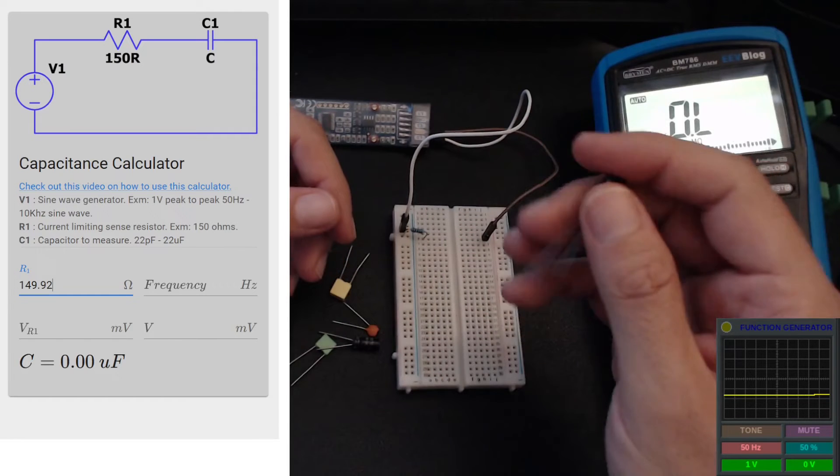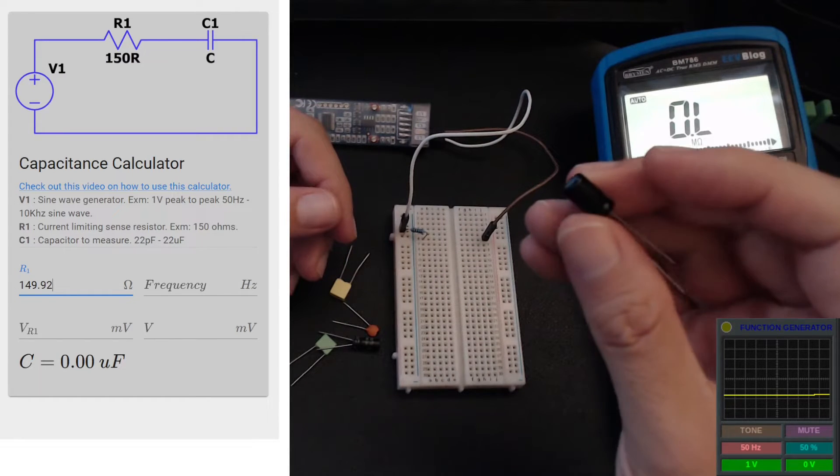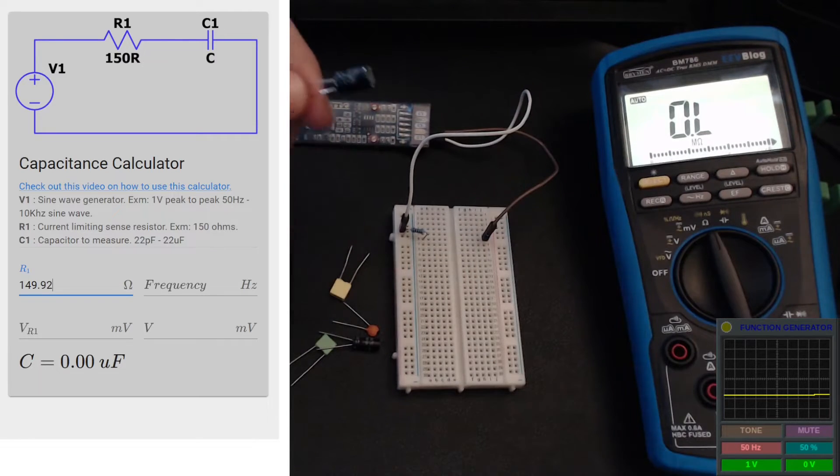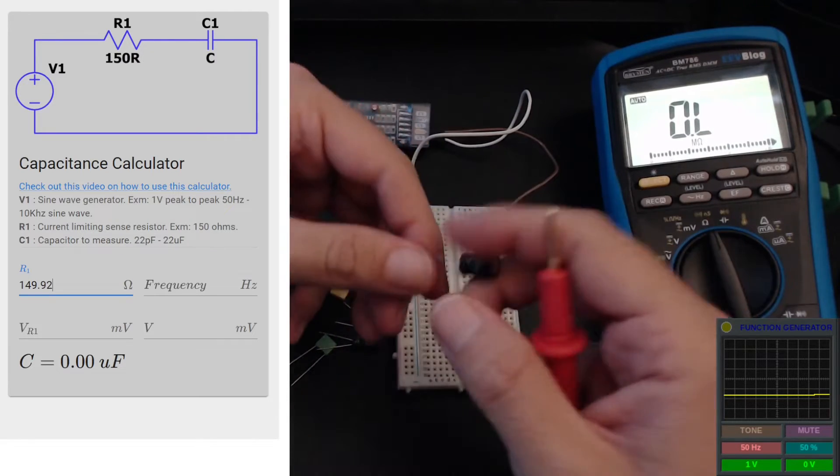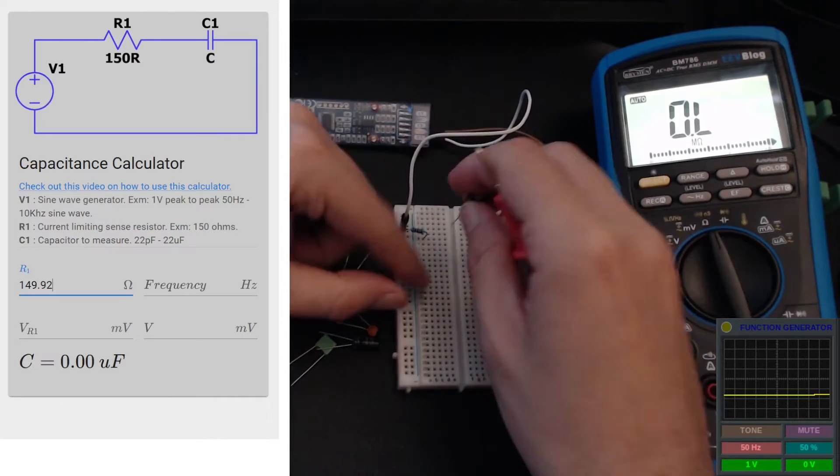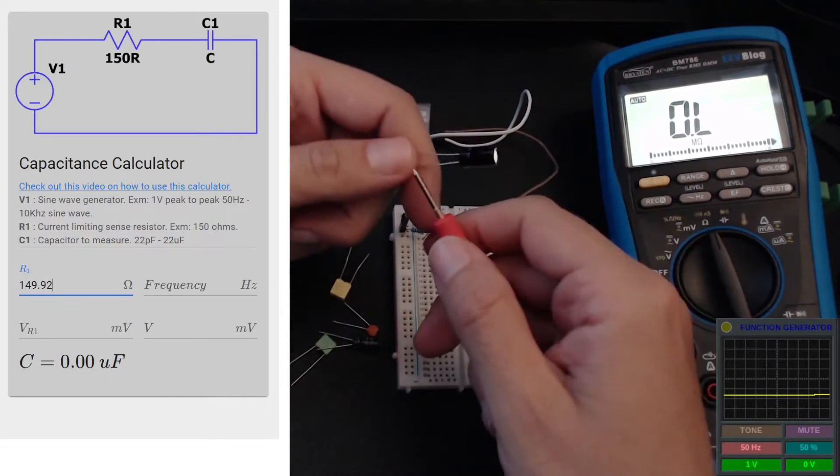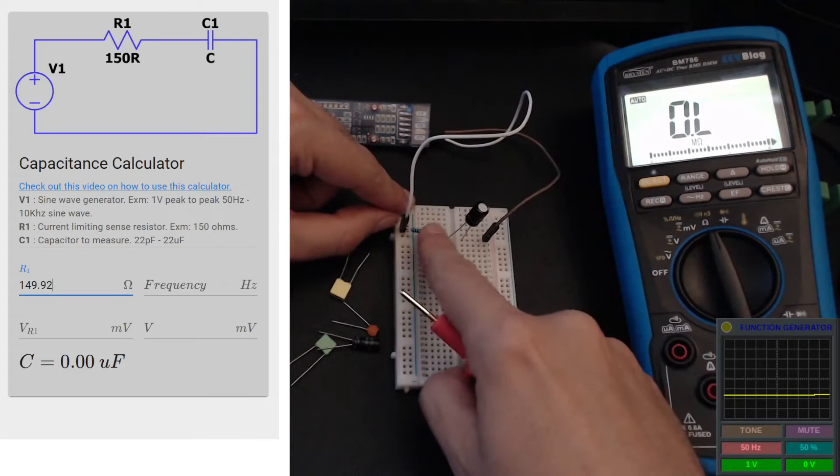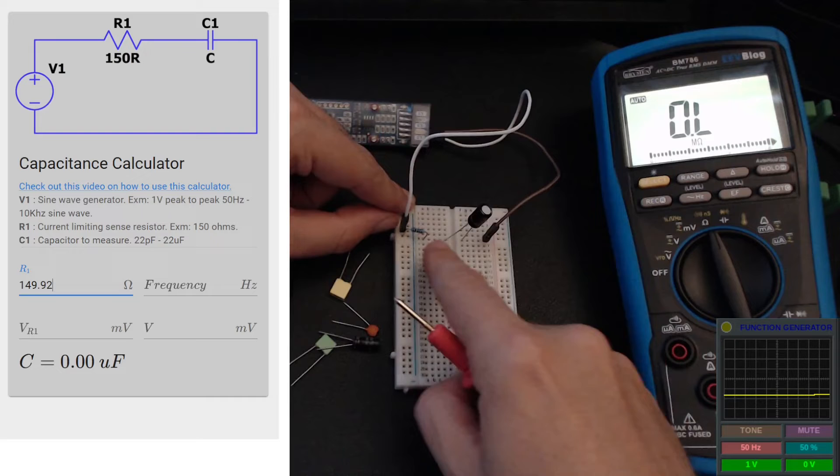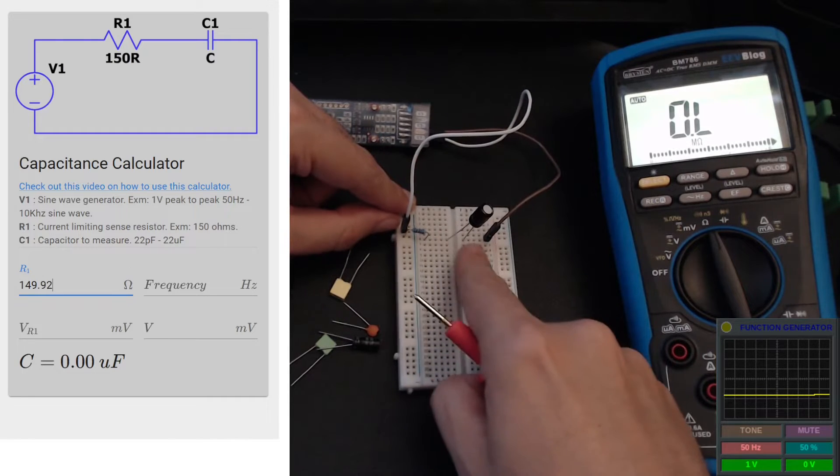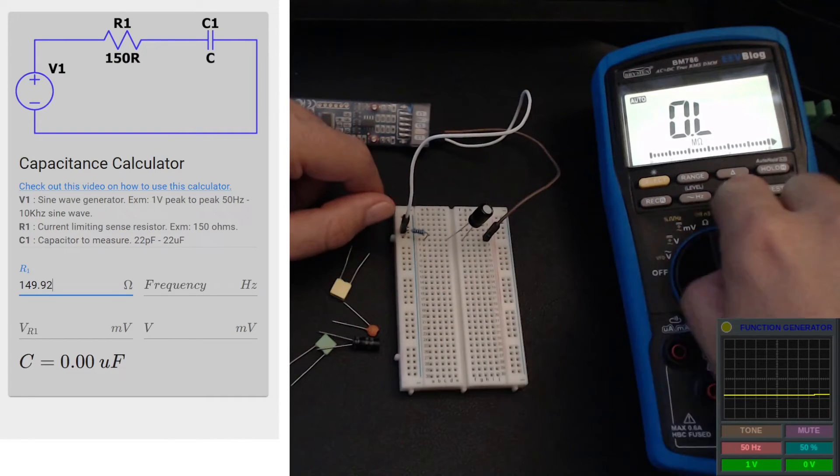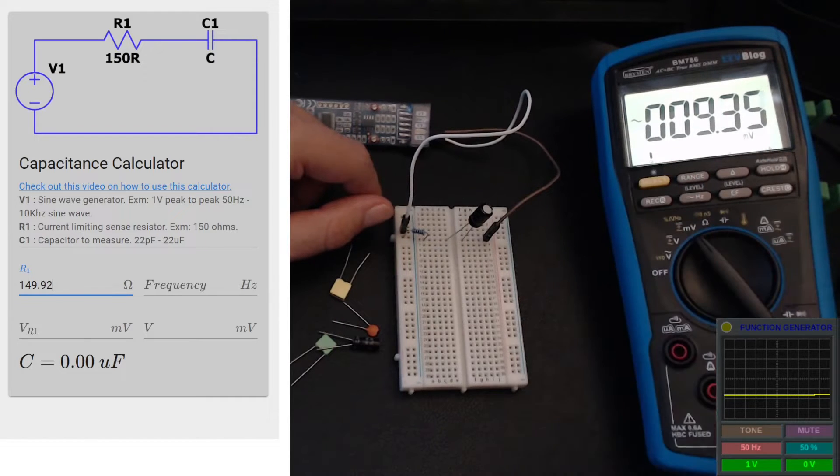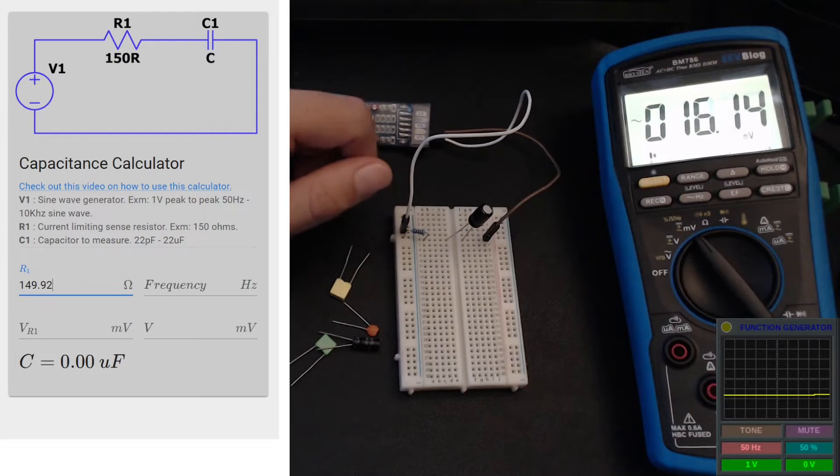Without further ado, let's start with this one. I'm just going to, before measuring the caps, you just want to discharge it just in case. I'm just going to use the probe of my multimeter to discharge it and then put it on the breadboard in series with the resistor. This is an electrolytic cap so I'll just be aware of the polarity of it.